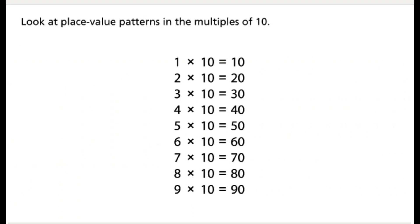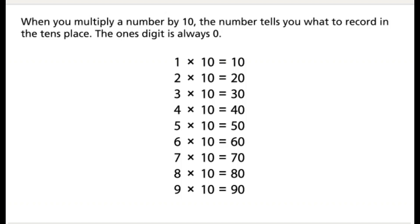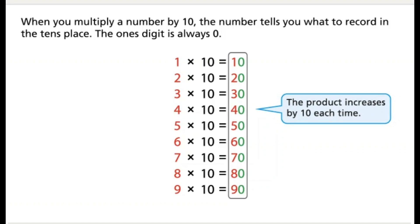Look at place value patterns in the multiples of 10. When you multiply a number by 10, the number tells you what to record in the tens place. The ones digit is always zero. The product increases by 10 each time.